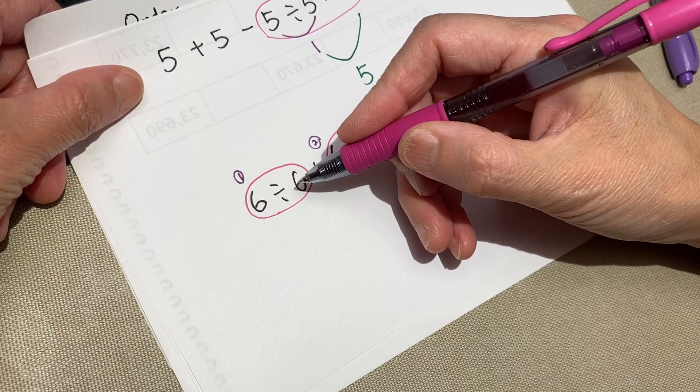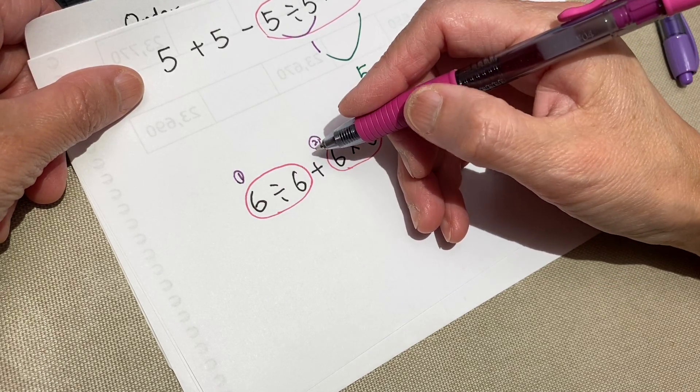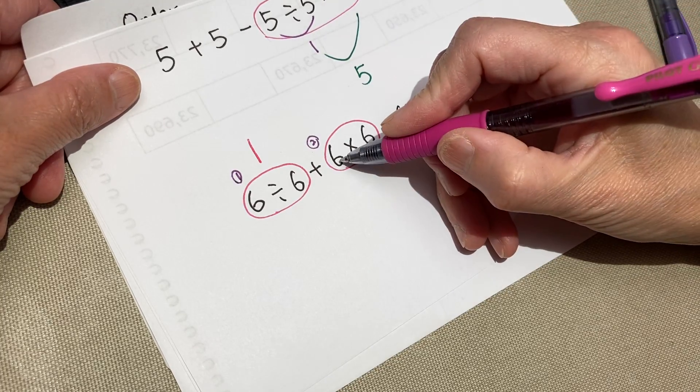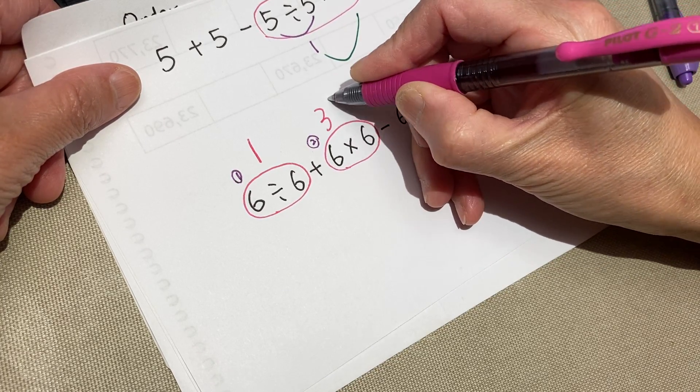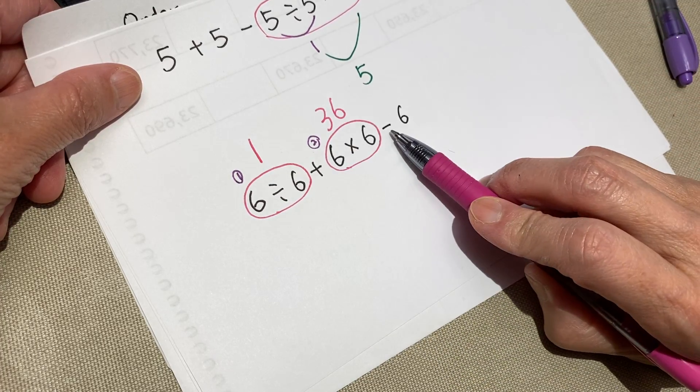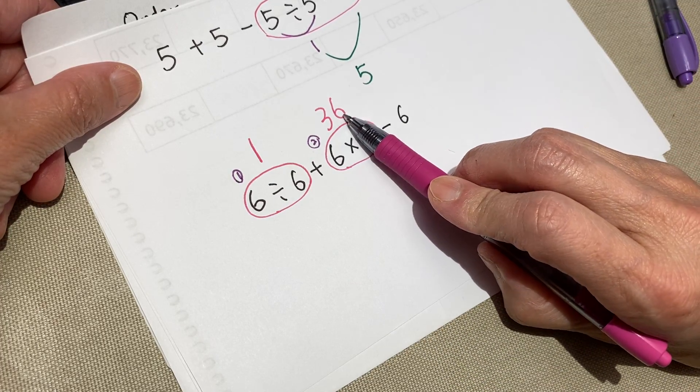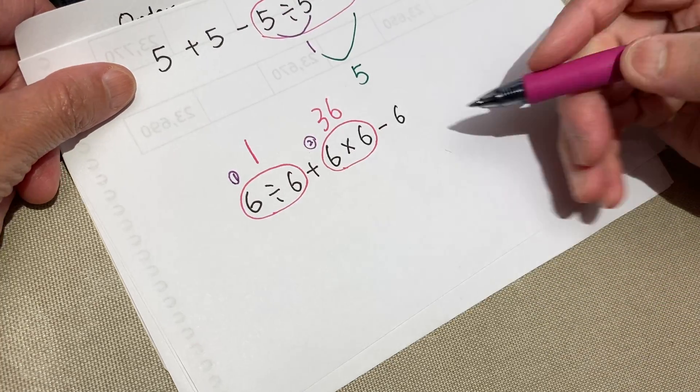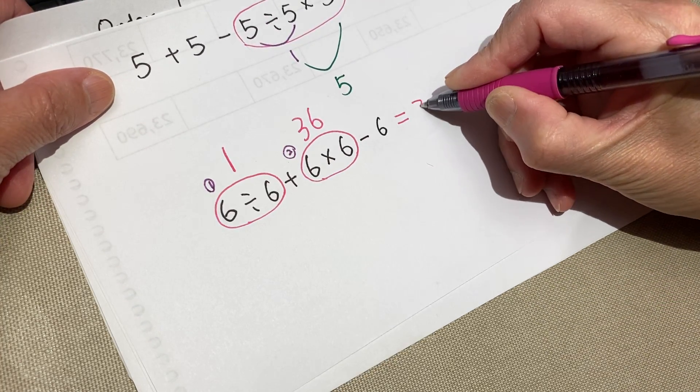So let's work on the first one. Six divided by six, we get one. And six times six, we get 36. So we have one plus 36 minus six. 36 minus six is 30. 30 plus one is 31.